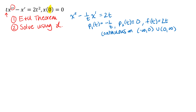Because our initial condition is given at zero and the coefficient functions are not continuous at zero, we basically can't draw any conclusions from the existence and uniqueness theorem. That means we may or may not have a solution to this differential equation with this initial value, and if we do have a solution, it may or may not be unique.